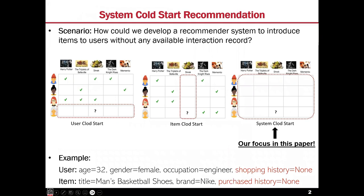In this study, we focus on a challenging problem in recommender systems where we do not have any observed interactions between users and items. We call it the system cold start problem. It could be a practical situation for startup businesses. The cold start problem has been explored in previous studies — they assume that we have some new users or new items coming into the system without historical interaction data. However, in our system cold start setting, we do not have interactions between any user and item. The interaction records are empty.